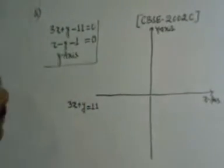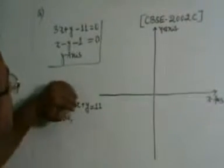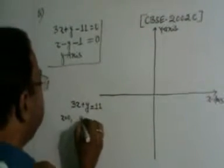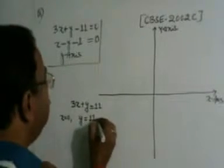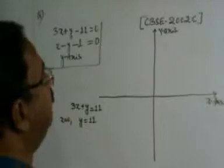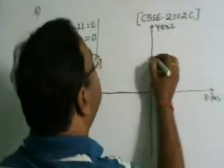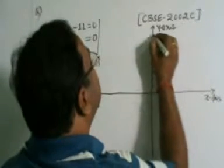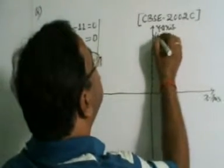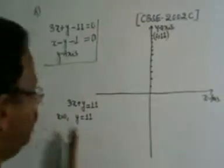Now, put x is equal to 0. Jab is mein x 0 put karenge, to kya hojayega? We have y is equal to 11. So kya hua? Ki 0 aur 11. Now, this is 1, 2, 3, 4, 5, 6, 7, 8, 9, 10, 11. Now, this is 0 and 11. Yeh iska coordinate hoga, 0, 11.